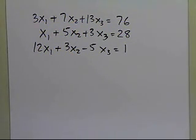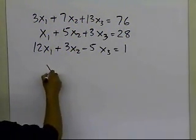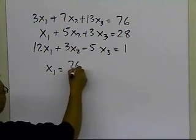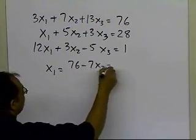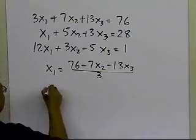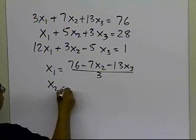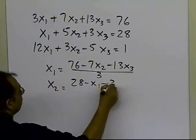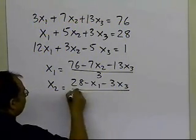Now, if we are going to apply Gauss-Seidel method, what you will have is that your first equation will be written as x1 = (76 - 7x2 - 13x3) / 3. Your second equation, x2, will be written as (28 - x1 - 3x3) / 5.